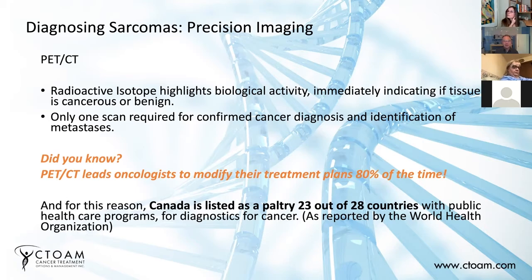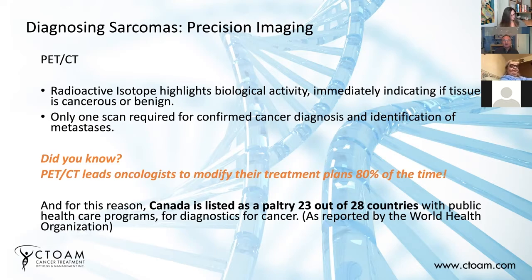Typically, you get injected with this radioactive sugar, sit around for about an hour or so until it gets absorbed by all your tissues, and then you get a CT scan. The CT scan is usually low contrast — a lower radiation dosage than a single CT scan — because with PET-CT you're interested in the biological activity, not necessarily the definition of the tumor itself. The amount of radioactive sugar isotope taken up by the tumor is called the SUV, also referred to as the serum uptake value. More aggressive tumors will drink up more and have a higher SUV.